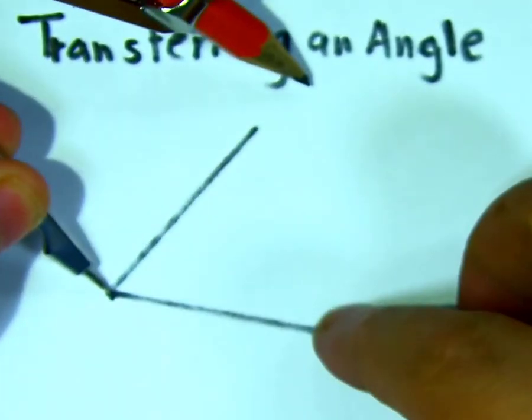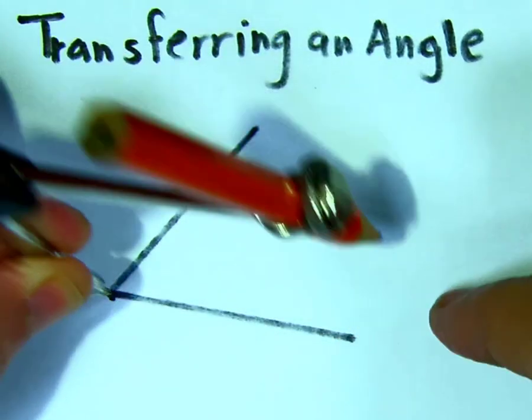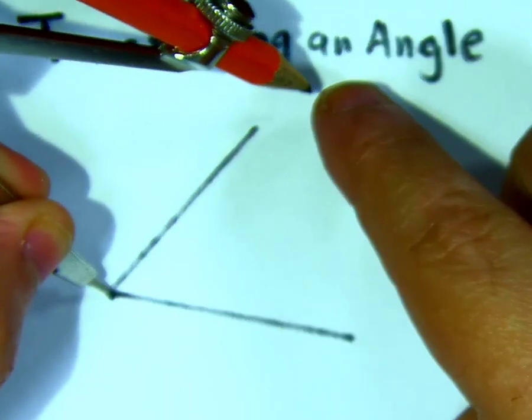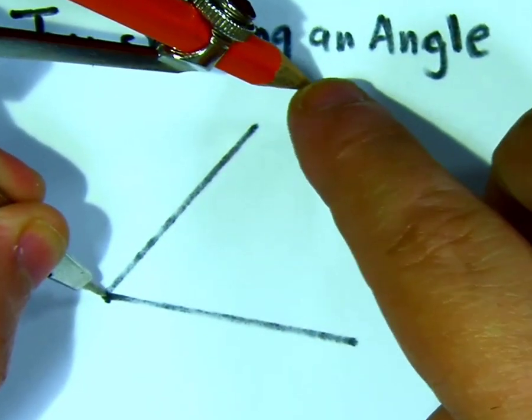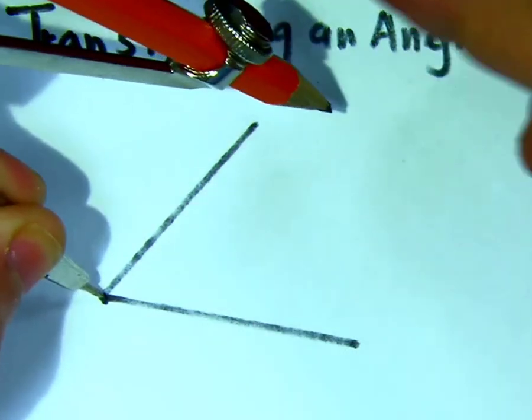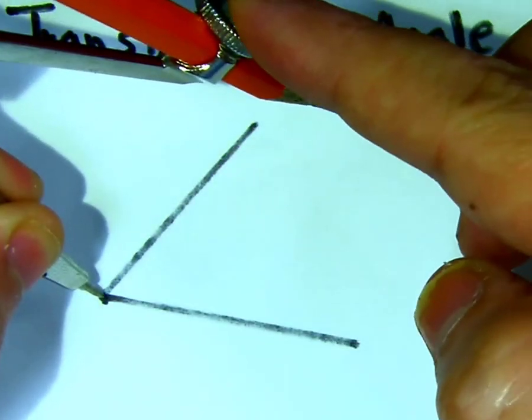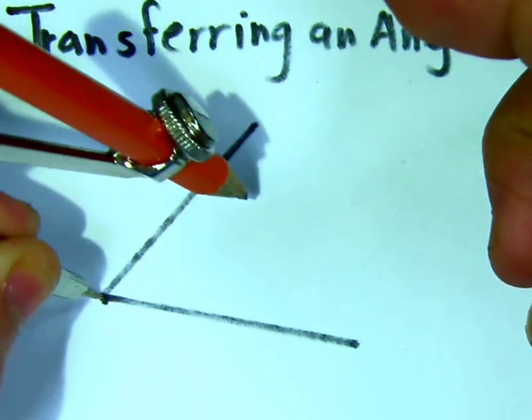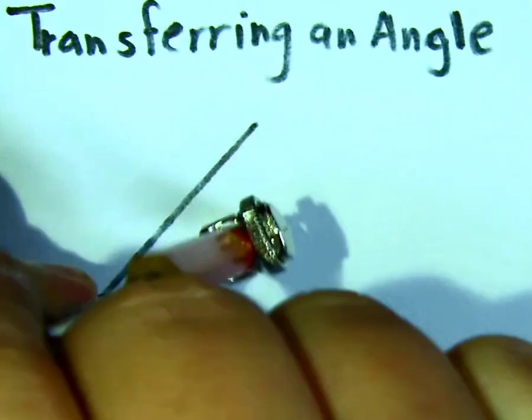One condition: when you open this compass, don't exceed the length of the line because there's no point in doing this. Our aim is to have an intersection between the arc that you're going to create and the existing lines of the angle. Now change the opening—this seems good.